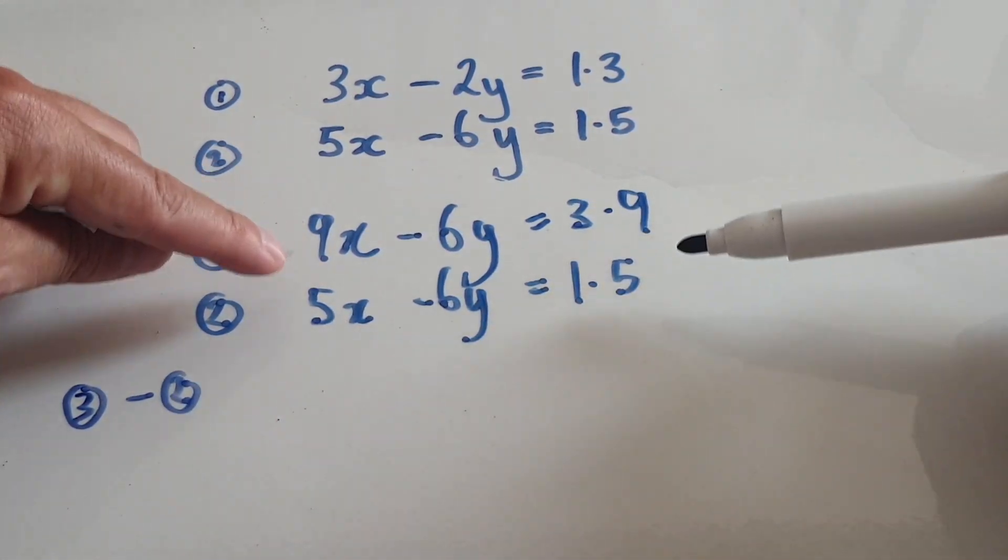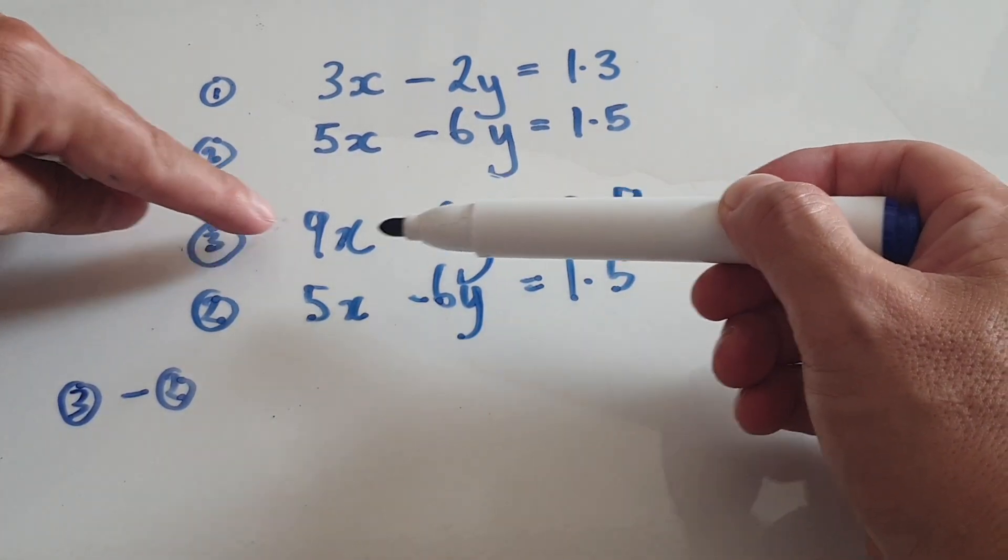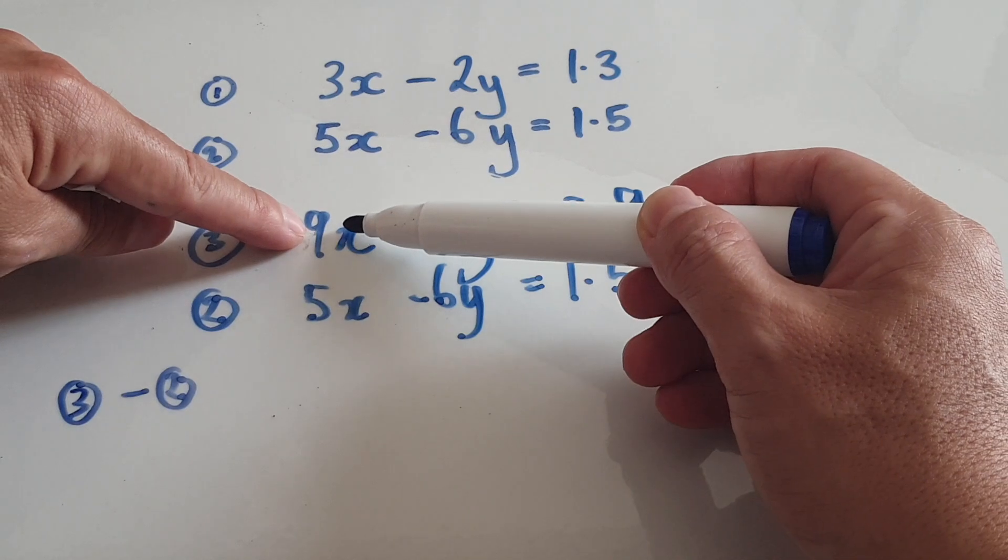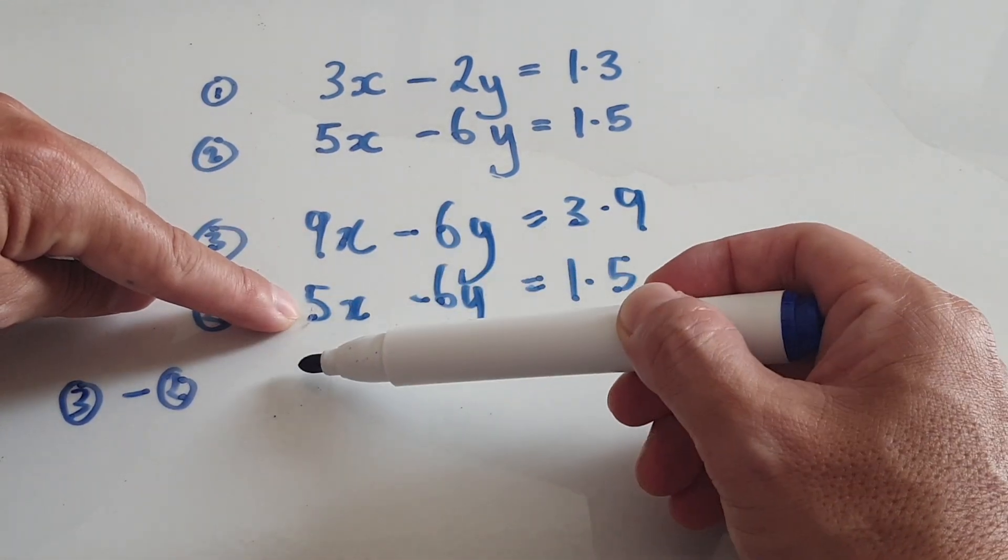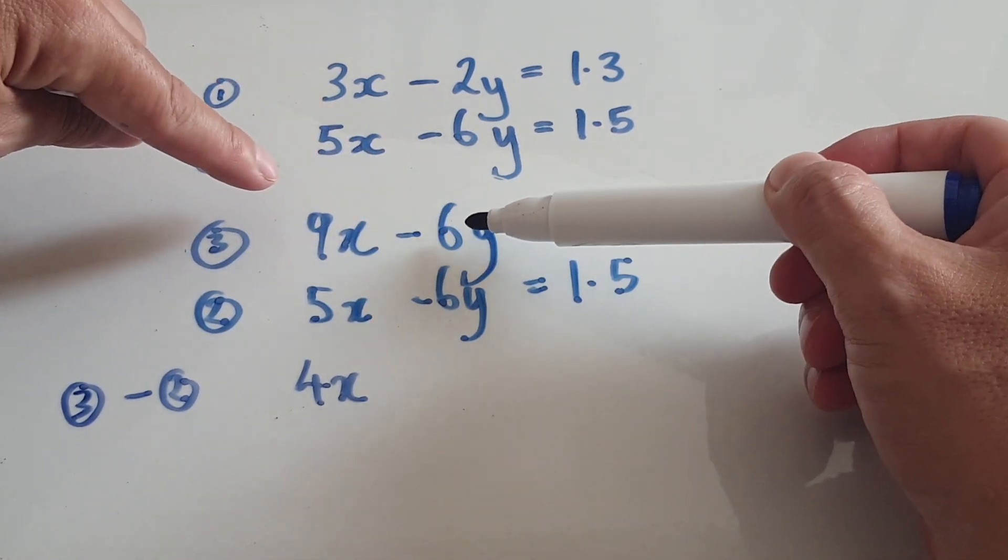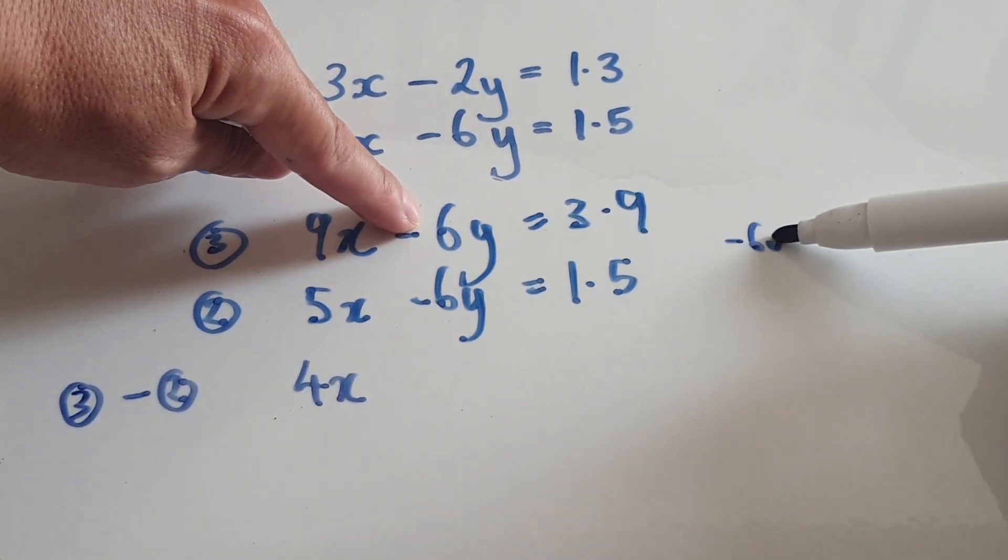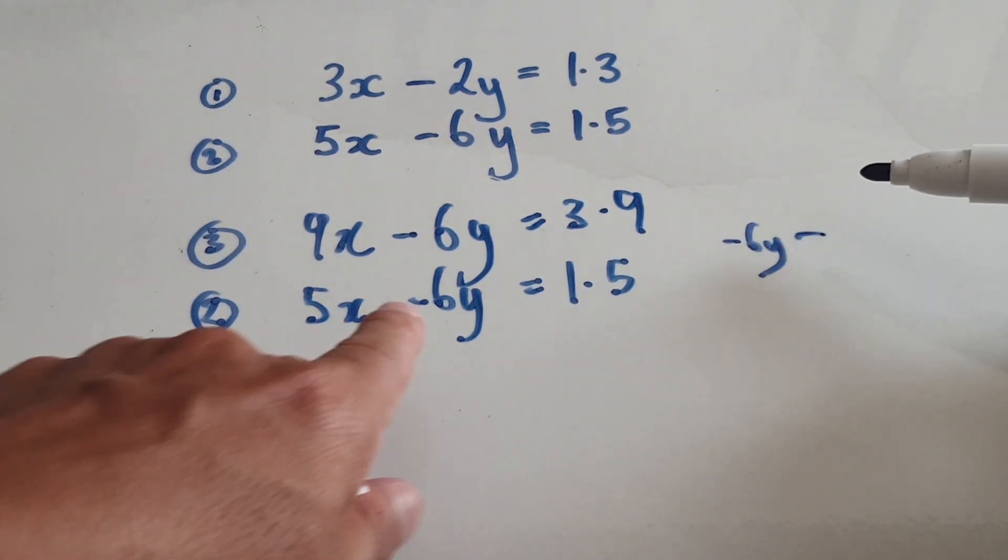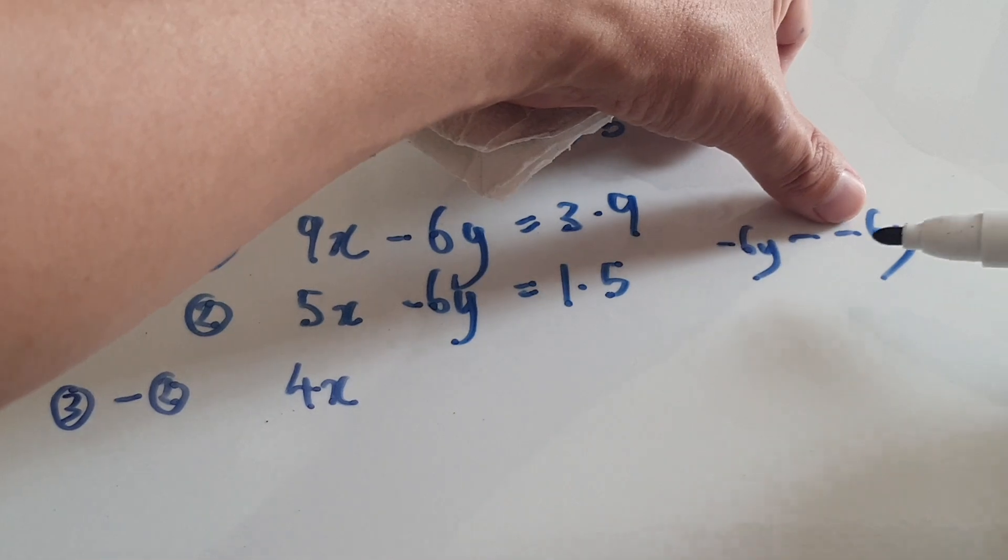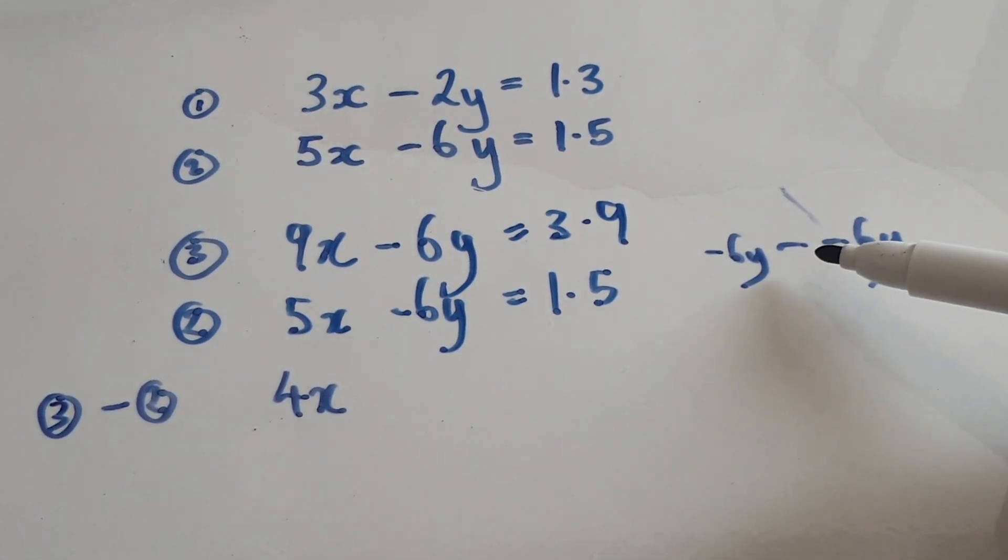So equation 3 take away equation 2. That would be 9x take away 5x, that would be 4x. Now this is kind of confusing. The minus belongs to this 6y here. So here you've got minus 6y, and then you take away minus 6y. So take away a negative would be a positive. So you in effect eliminate the y.